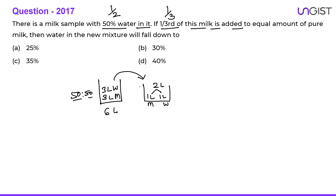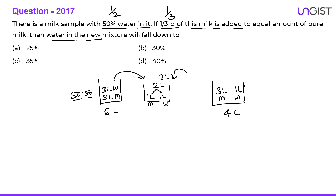Two liters of this mixture is added to an equal amount of pure milk, meaning two liters of pure milk is added to it. So the total becomes four liters. In those four liters we have three liters of milk and one liter of water. The new mixture is four liters, with one liter of water, which is one-fourth — that is 25% water.